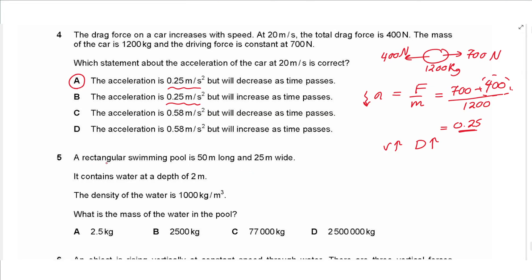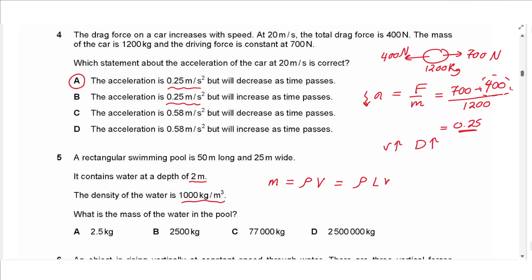Question 5: a rectangular swimming pool is 50 m long, 25 m wide, and contains water at a depth of 2 m. The density of water is 1000 kg/m³. Using mass = density × volume, and volume = length × width × height: 1000 × 50 × 25 × 2 = 2,500,000 kg. The answer is D.